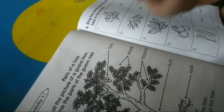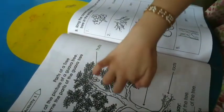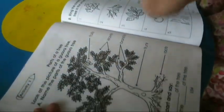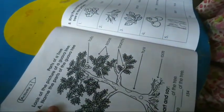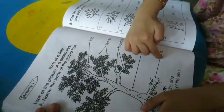These are the fruits of the tree. These are the leaves of the tree. These are the branches of the tree. This is the trunk of the tree. These are the roots.